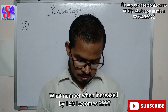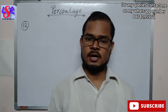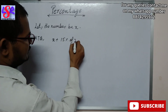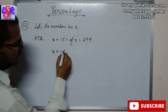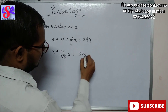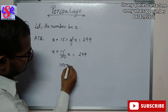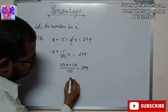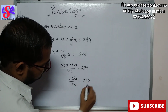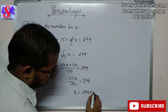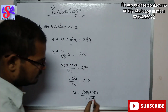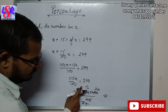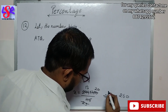Now we have Question 12: what number when increased by 15% becomes 299? Let the number be x. According to the question, x plus 15% of x equals 299. So x plus 15 upon 100 x equals 299, giving 115x upon 100 equals 299. Therefore x equals 299 into 100 upon 115. Dividing by 5 gives 20 and 23, and 299 divided by 23 is 13. So x equals 13 into 20, which is 260 as the answer.